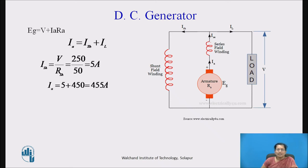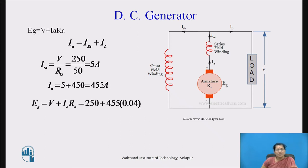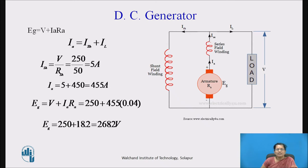The armature current IA equal to ISH plus IL. Already IL is given as 450. So armature current is calculated as 5 plus 450, that is 455 ampere. And EG for a shunt generator is V plus IA·RA equal to 250 plus 455 into 0.04. After calculation, we will get EG equal to 250 plus 18.2 equal to 268.2 volt.